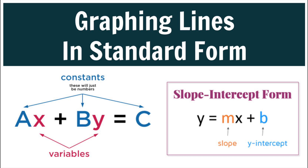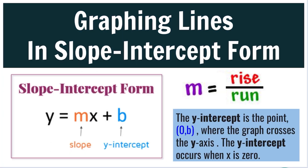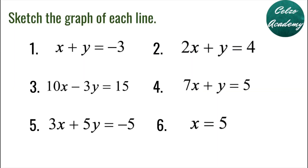When graphing the slope, we need to use the concept of rise over run. The Y-intercept is the point (0, B) where the graph crosses the Y-axis, meaning the Y-intercept occurs when X is 0. Here are 6 examples — give it a try and play the video whenever you're ready for the solutions.